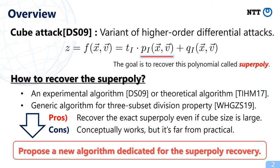For cube attack, the main goal is to recover the superpoly. We have several approaches. The first approach was proposed by Dinur and Shamir, and this method is the experimental method. Another method was recently proposed at Crypto 2017, and this method uses a theoretical algorithm. Very recently, a more generic algorithm using three-subset division properties was proposed at AsiaCrypt last year. Using this technique, we can recover the exact superpoly even if the cube is very large. But if we want to apply this algorithm for the best attack against stream ciphers, it's far from practical.